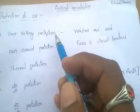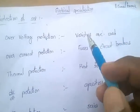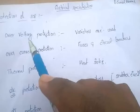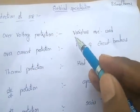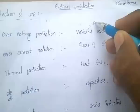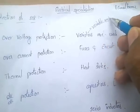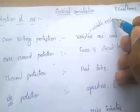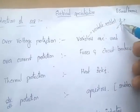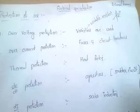Overvoltage protection: varistors are used to protect the device from overvoltage. Varistors are nothing but variable resistors — that means we can vary the resistance. Variable resistors are used for protecting from overvoltage.